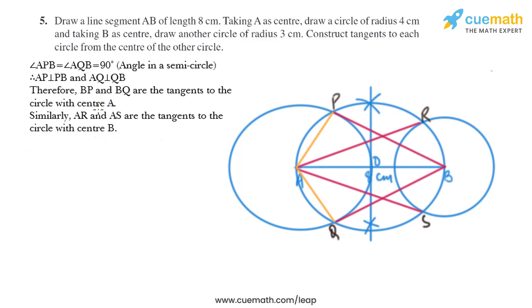Now let's do the justification of this construction. Angle APB equal angle AQB equal 90 degree, angle in a semicircle, and AP is perpendicular to PB and AQ is perpendicular to QB. Therefore BP and BQ are the tangents to the circle with center A. Similarly AR and AS are the tangents to the circle with center B.